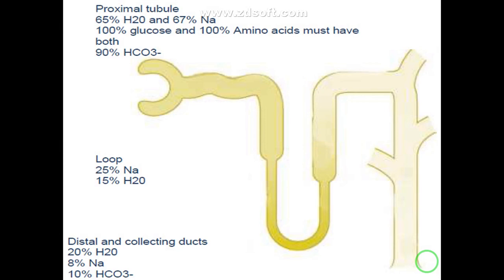This slide shows that 60% of water and 67% of sodium, 100% of glucose, and 100% of amino acids are reabsorbed from the proximal convoluted tubule. The loop of Henle handles 25% of sodium and 11% of water. The distal and collecting tubule handles 20% of water, 8% of sodium, and 10% of urea.